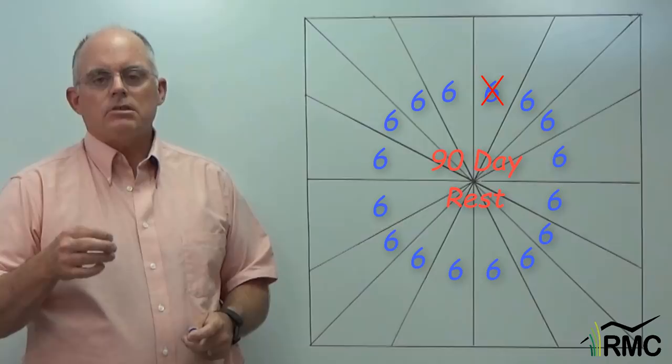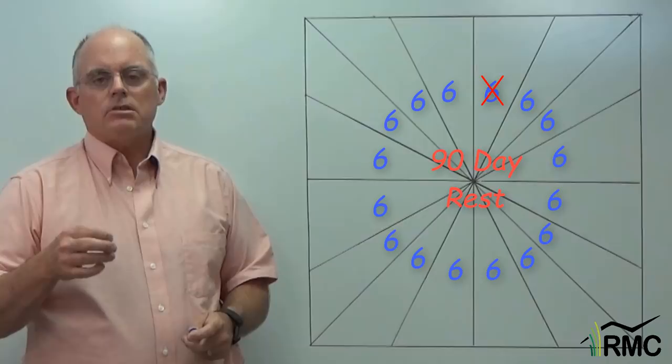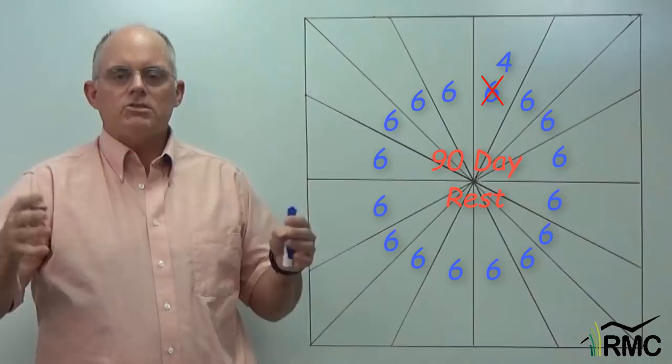That means instead of six days of grazing, the cows spent four days grazing. And instead of 90 days of rest, the overall rest period is only 88 days. Big deal. Two days? Well, is two days really that big a deal?